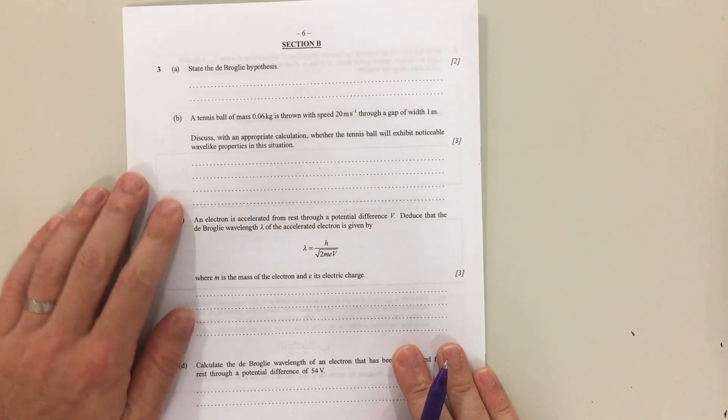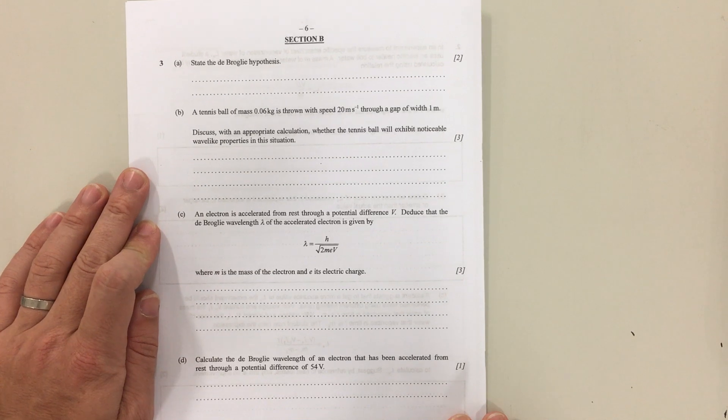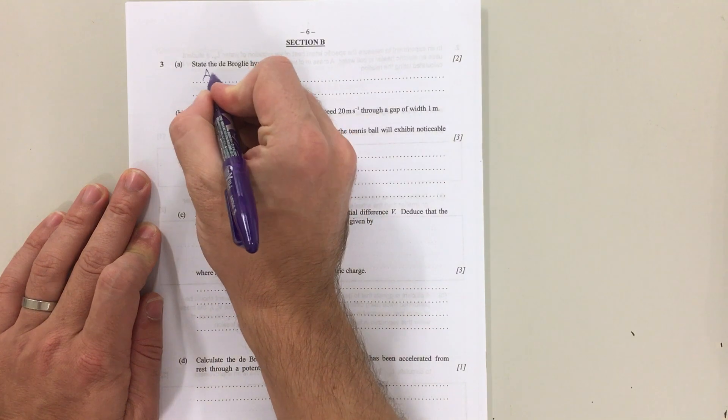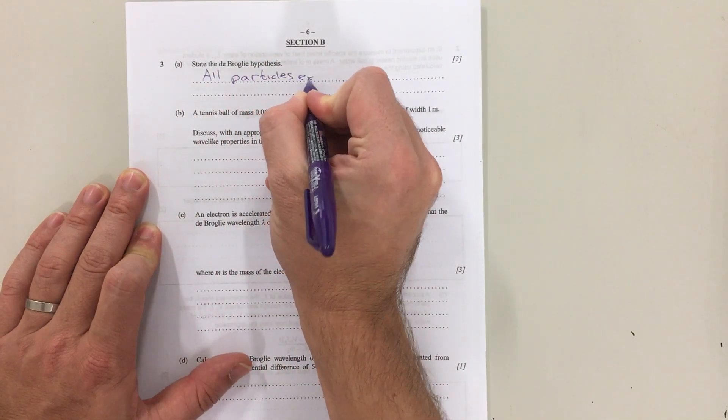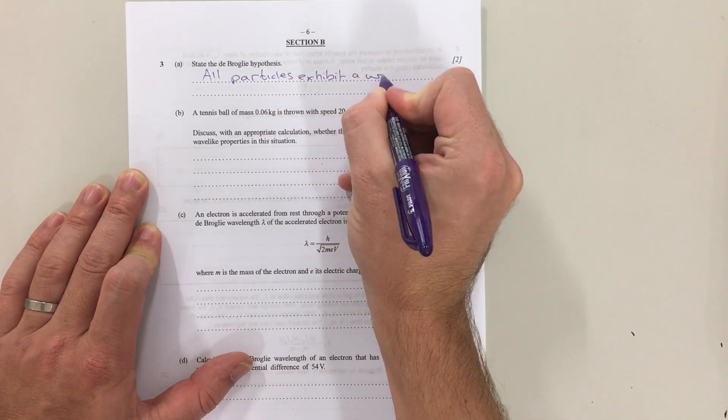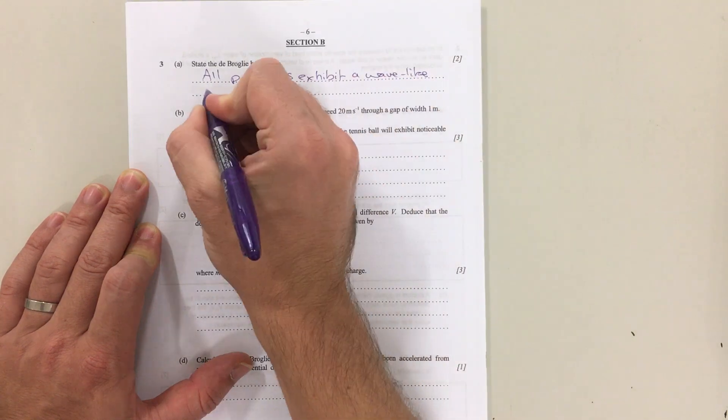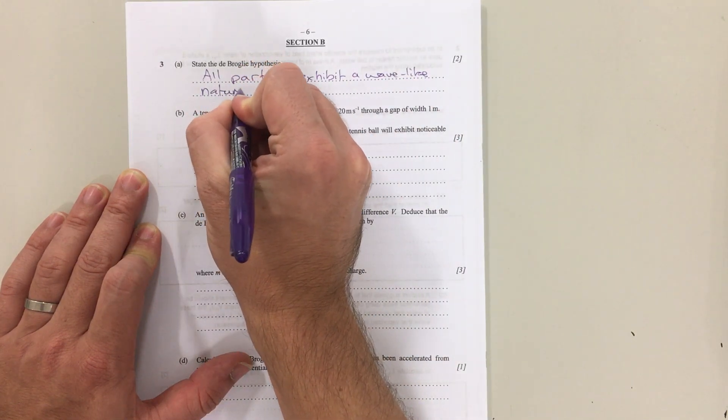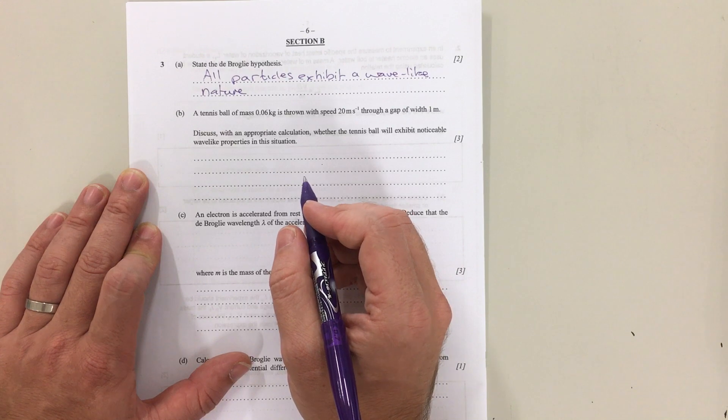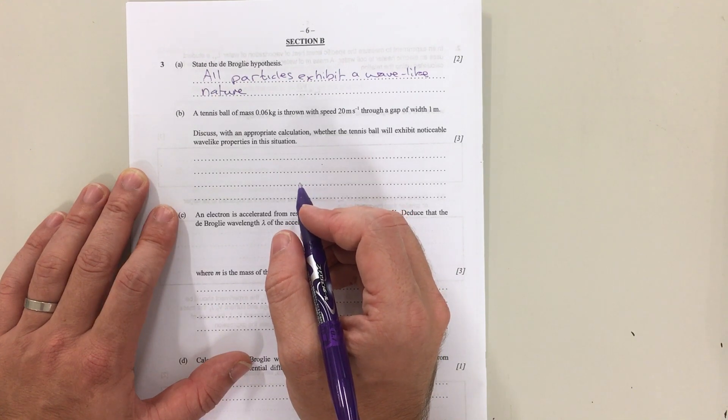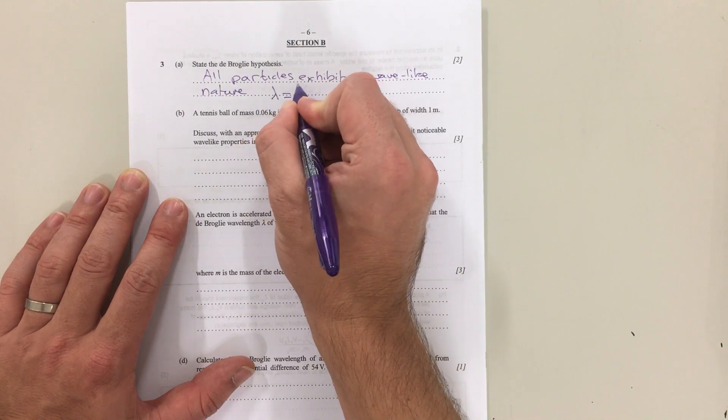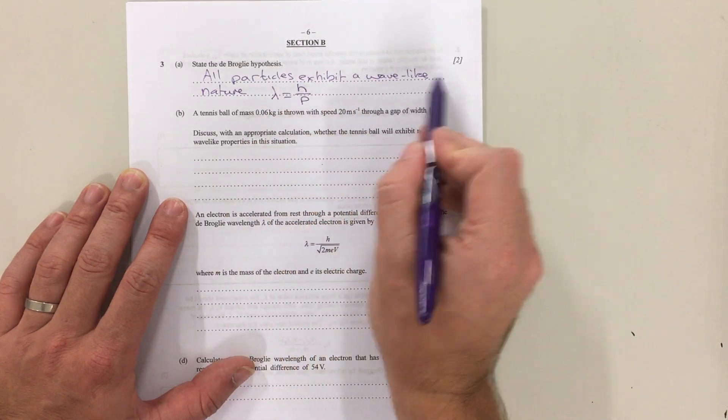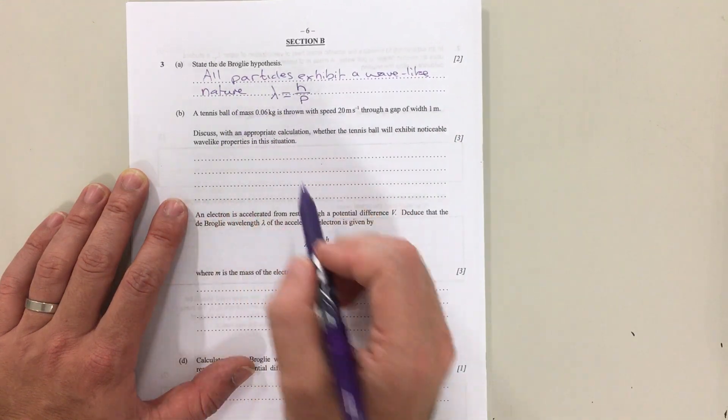The first question says state the de Broglie hypothesis. The de Broglie hypothesis is that all particles exhibit a wave-like nature. The wavelength of those particles is given by Planck's constant divided by the particle's momentum, so λ = h/p. You get one mark for the definition and one mark for the equation, so that's two marks.